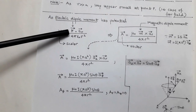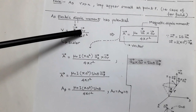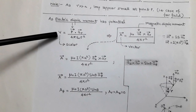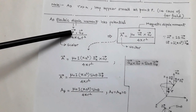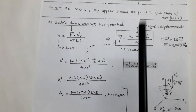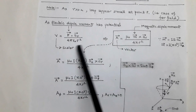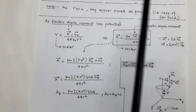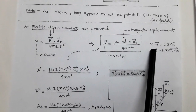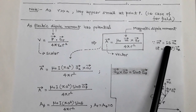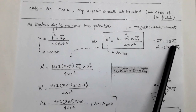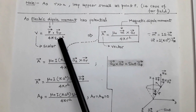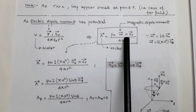From electrostatics, the electric dipole potential is V = (p⃗ · r̂) / (4πε₀r²). We can relate the magnetic dipole moment similarly to the electric dipole moment. In electrostatics the dipole moment is denoted by small p⃗, while in magnetostatics the magnetic dipole moment is m⃗ = I · S · n̂. In the electric case a dot product is used, while in magnetostatics a cross product is used.